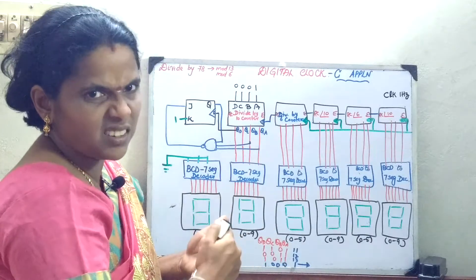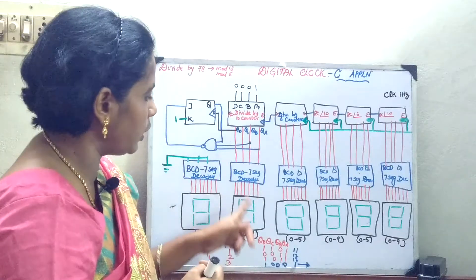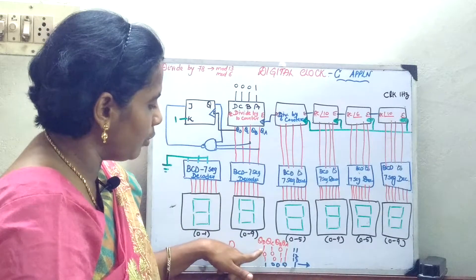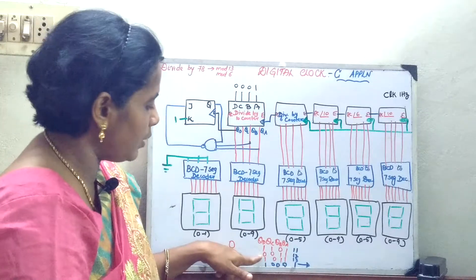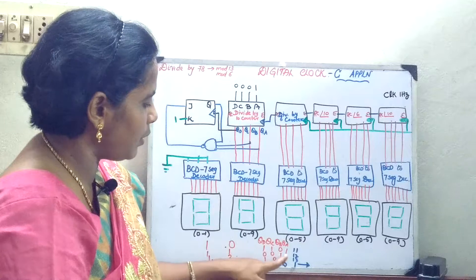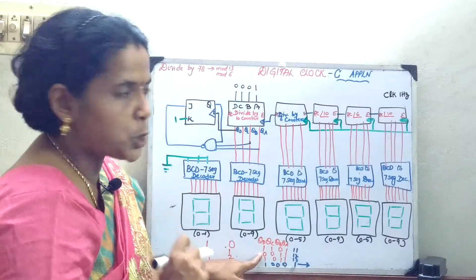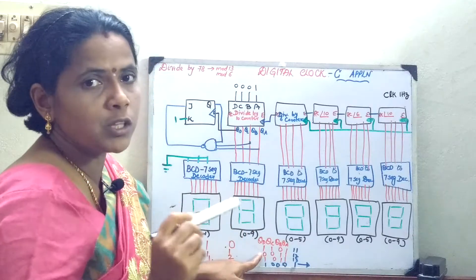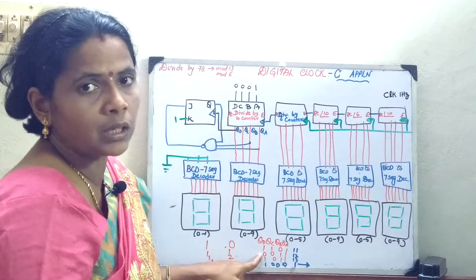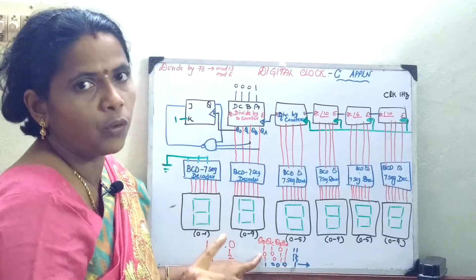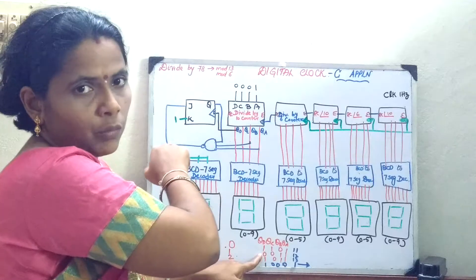Whenever it is going to count these 10 states, the count is 10 — 10 states are over. If I am going to apply 2 more clock pulses, then it will move on to 11 and then to 12. The binary for 11 is 1011 and for 12 is 1100. Now, what is the condition? Whenever I am going to display 12 hours — after 12, if any data is going to come, it should reset to 0. That is the concept, because I have to include a total of 12 hours. So whenever it reaches 13, it has to recycle to 0.